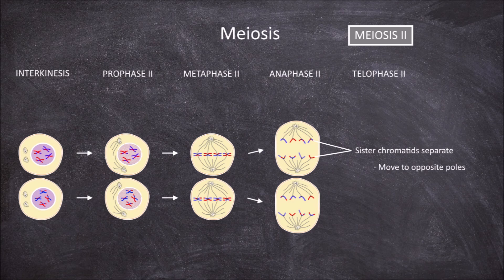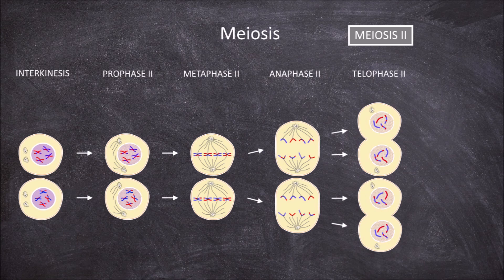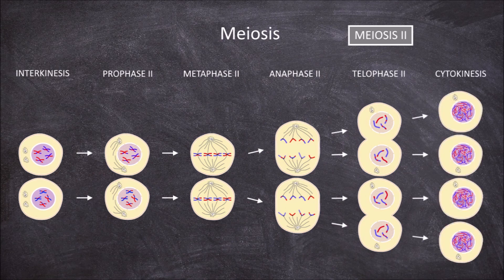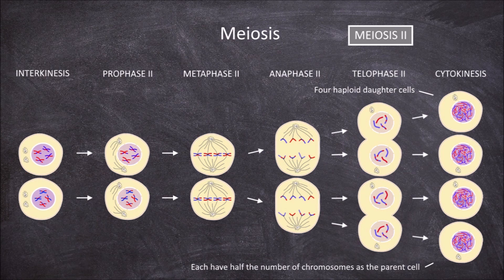The fourth phase of meiosis 2 is telophase 2. Now that the sister chromatids are separated onto the opposite poles of the cell, the spindle fibers break down. The nuclear envelope reforms around each set of chromosomes, re-separating the genetic material from the cytoplasm, and the chromosomes decondense. Cytokinesis again occurs at the same time as the end of telophase 2, where division of the cytoplasm in each cell creates a total of four haploid daughter cells that each contain half the number of chromosomes as the original parent cell. In animals, these haploid cells can mature into gametes — the sperm and the eggs.